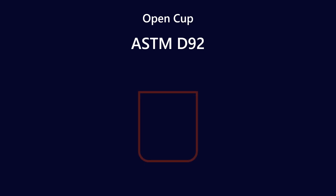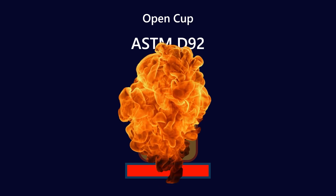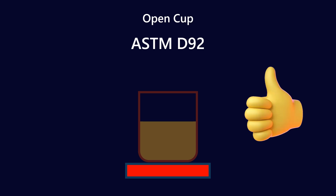ASTM D92 is the standard open cup test. You take a vessel that's open to atmosphere — no lid — fill it with lubricant, and put a hot plate underneath. As you heat it up, you try to induce a flame by putting a spark into the vapors. If nothing happens, you increase the temperature and try again. If you get a flash, that is the flashpoint of your lubricant.